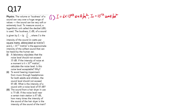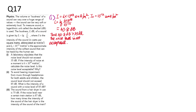For part A, you have a lab where the noise level cannot exceed 35 dB. If the intensity of the noise is 6 times 10 to the power of negative 8, substitute all the required values into the formula to find the loudness. Using your calculator you get 40.8 dB. Since 40.8 dB is more than 35 dB, the noise level is certainly not acceptable.